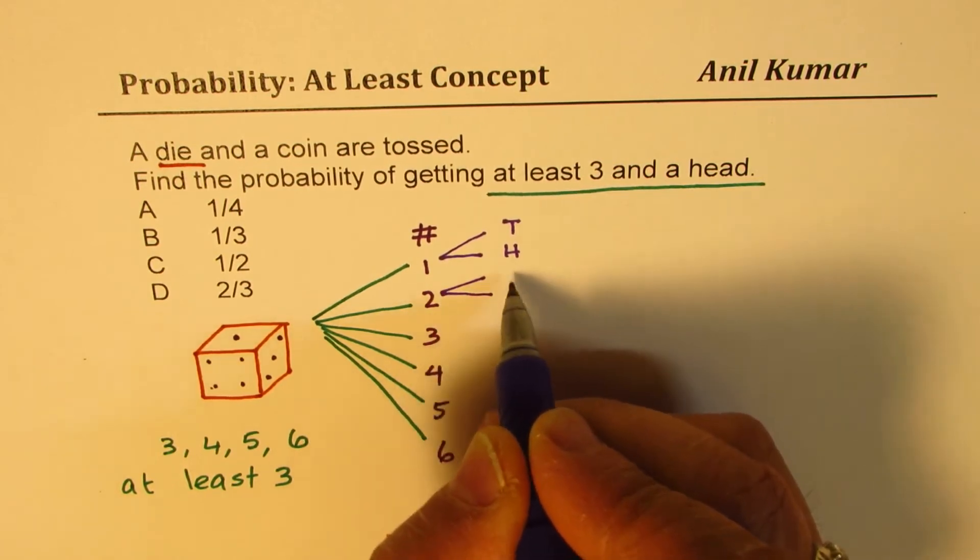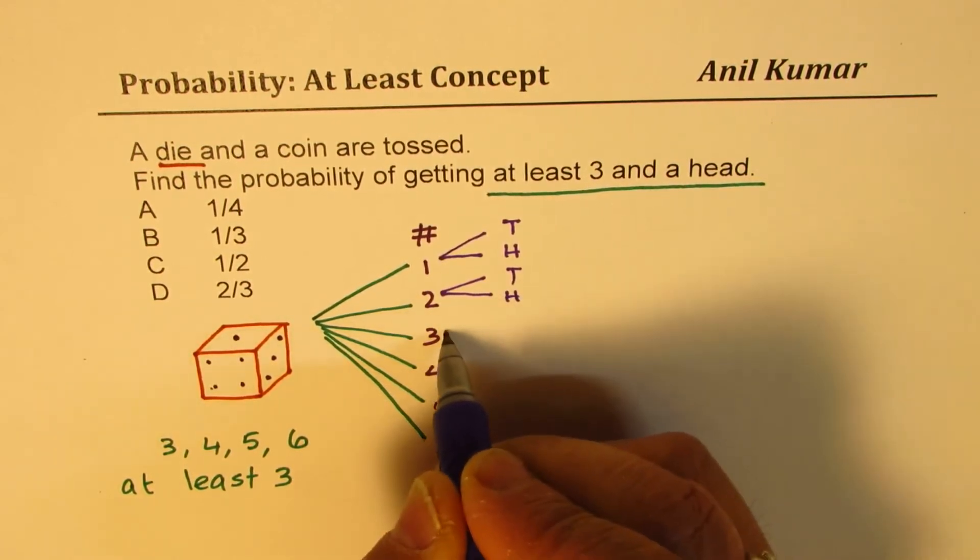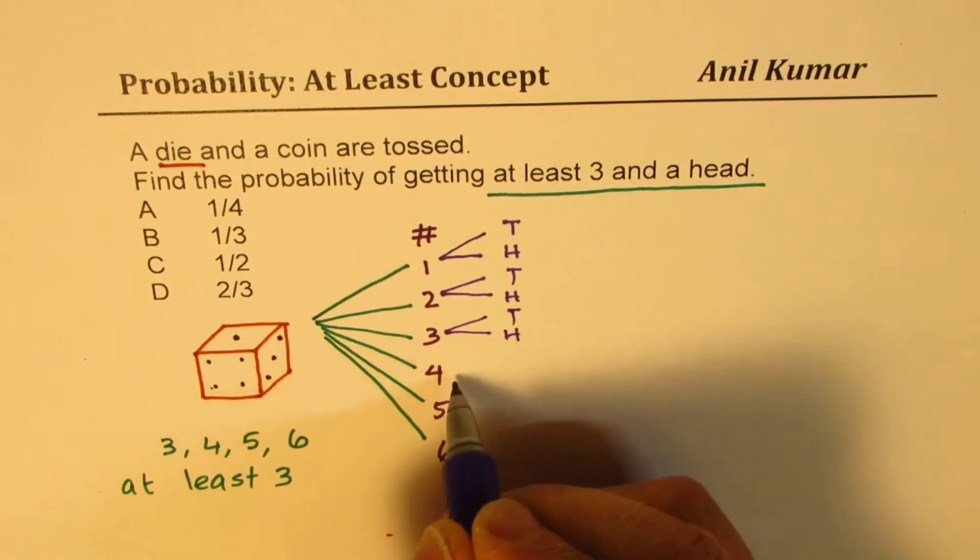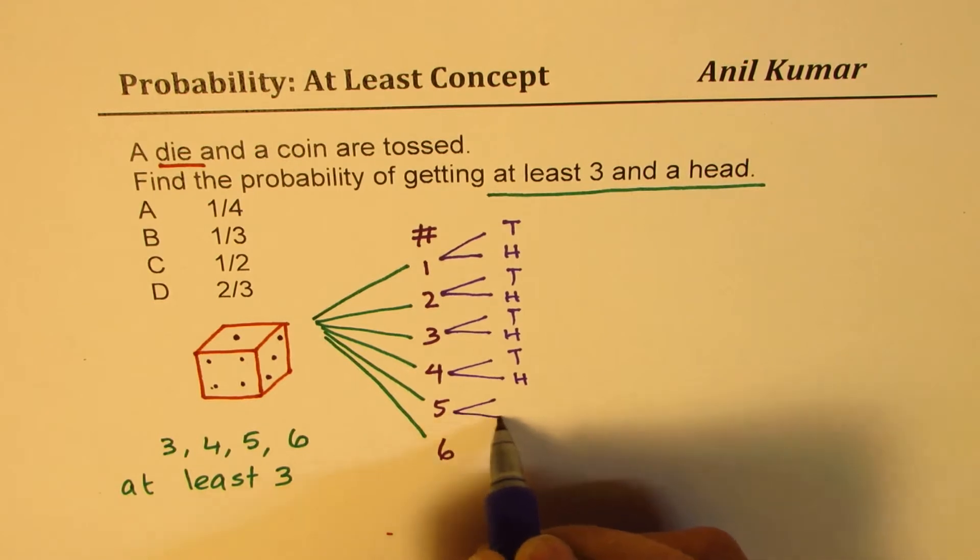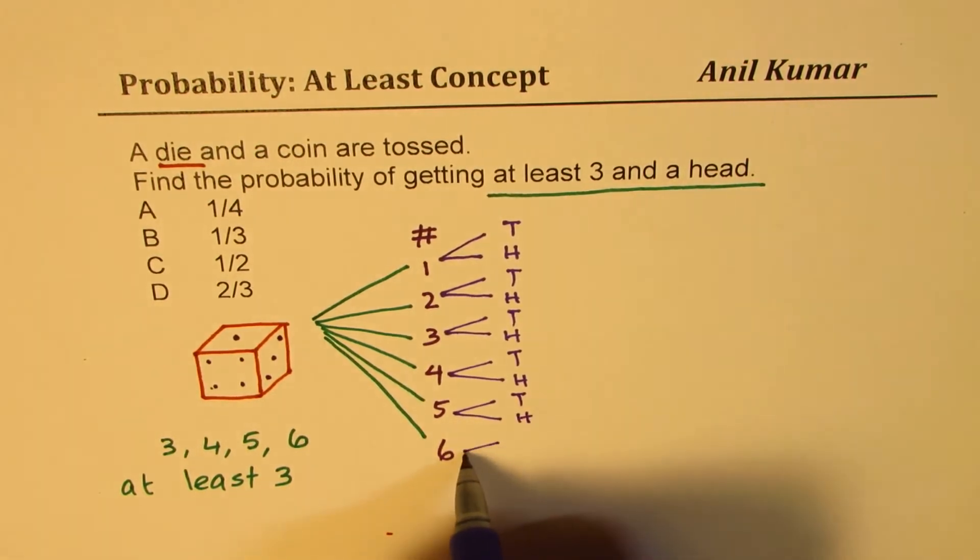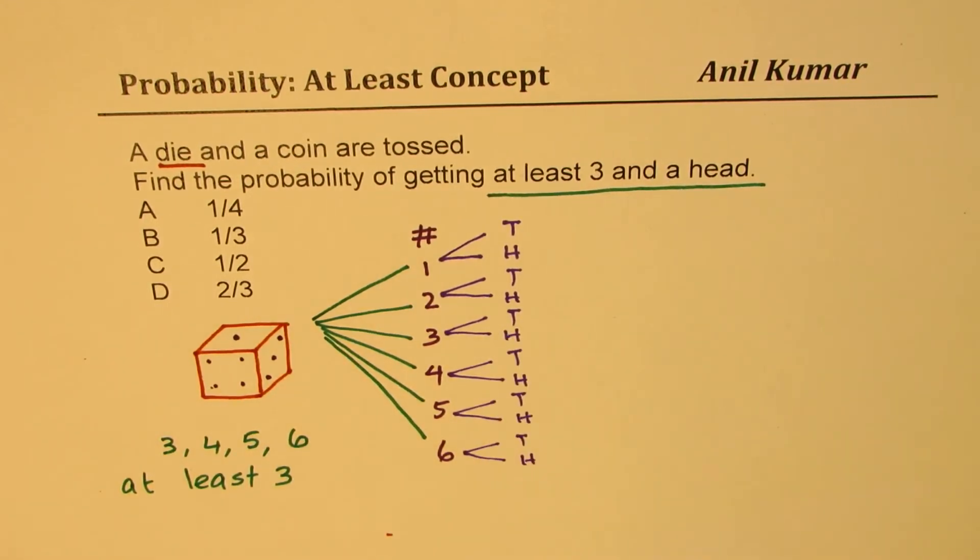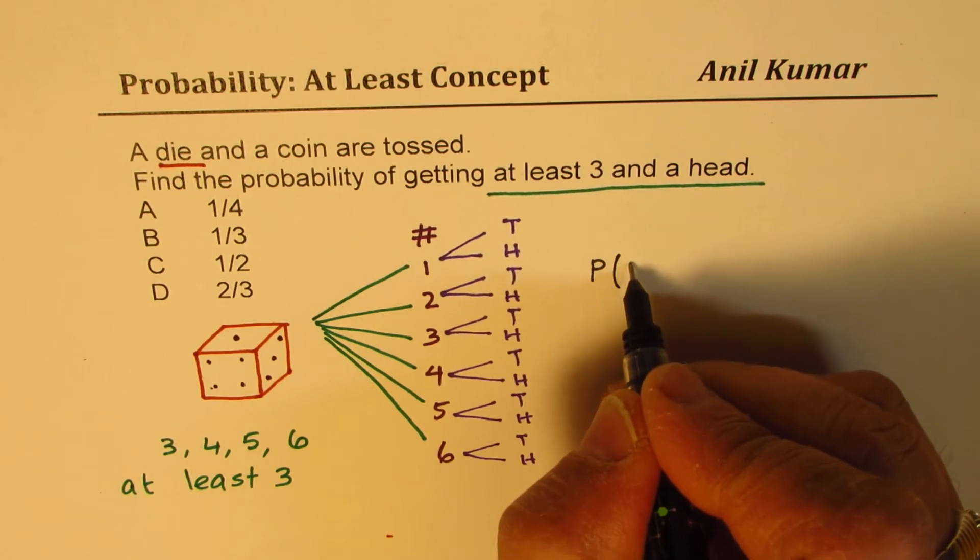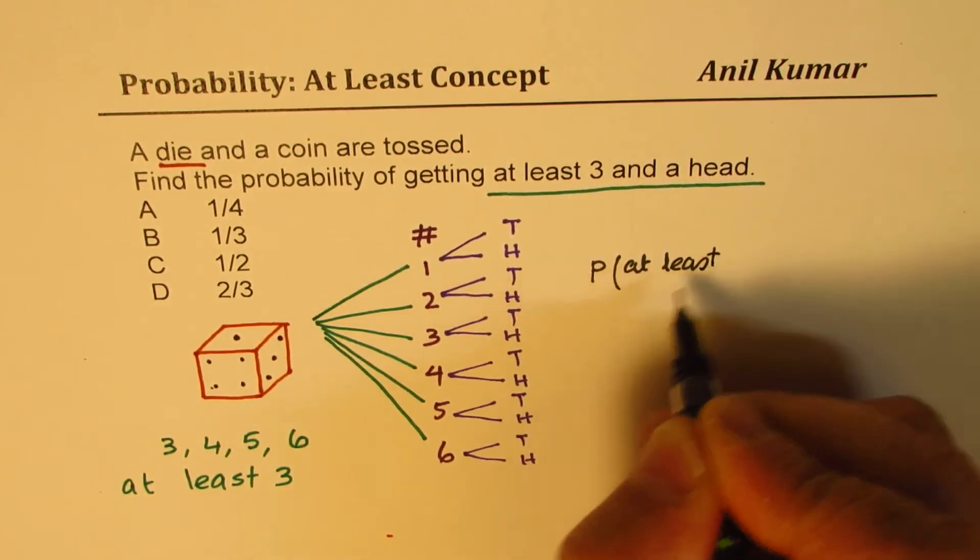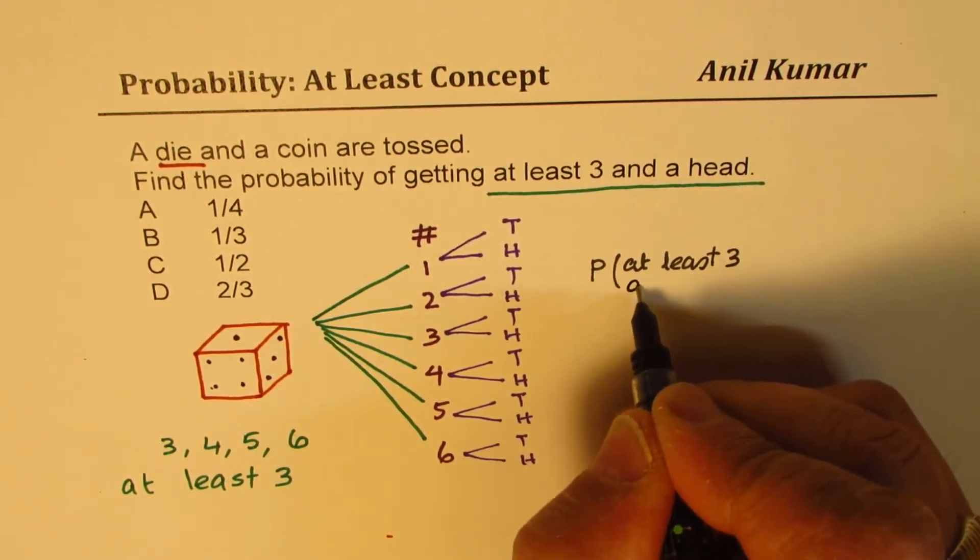So for each combination you have two possibilities - you could get a tail or a head. For each we have two: we could get tail or a head. Now I'm making this tree diagram so that you could visually see what is happening and how to get the result. In a competitive exam however, you're not going to do all this, but this will help you to visualize and get a quick answer.